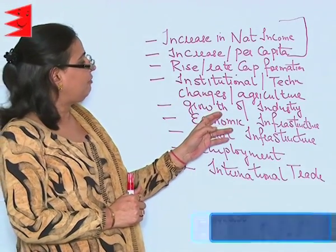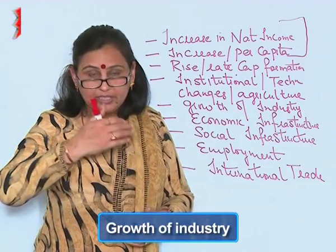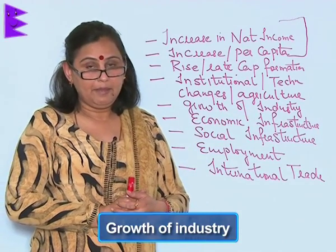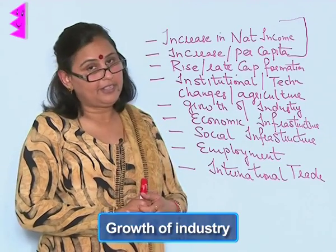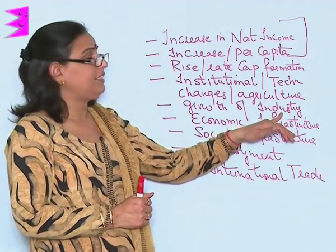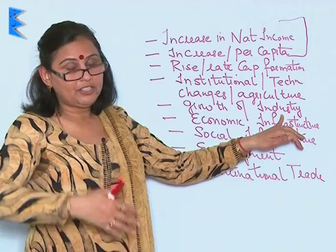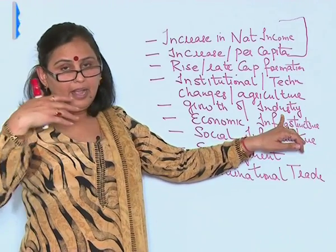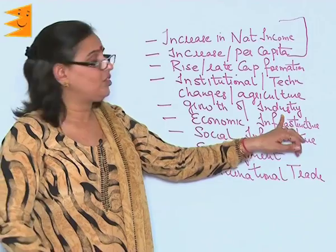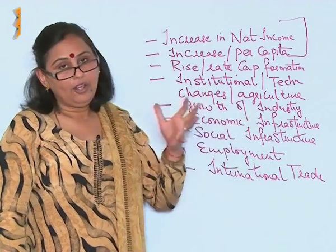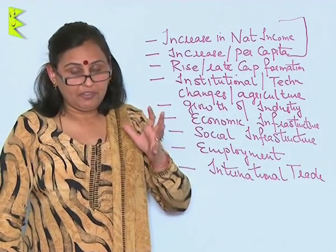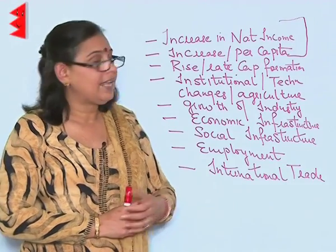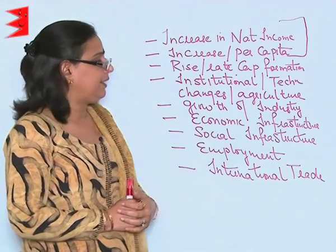The next achievement is growth of industry. The second five-year plan had impetus on industries as a goal, and here we have seen that besides heavy industries, small industries, cottage industries, and small-scale industries have all gained lots of importance and growth because of those goals.